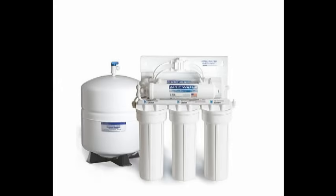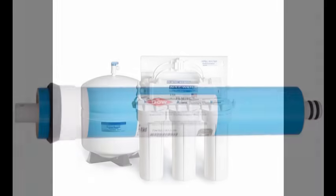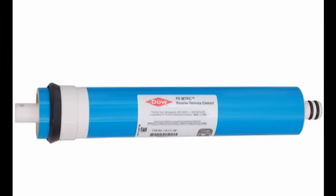A good RO system should remove 90 to 99% of the contaminants in the water. When the rejection rate falls below 80 to 90%, it is time to replace the membrane.